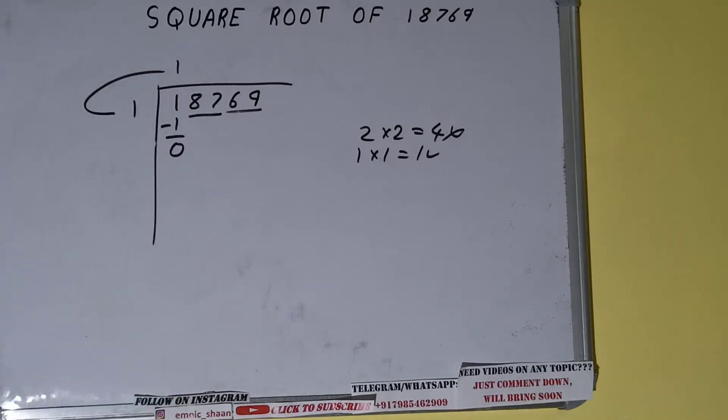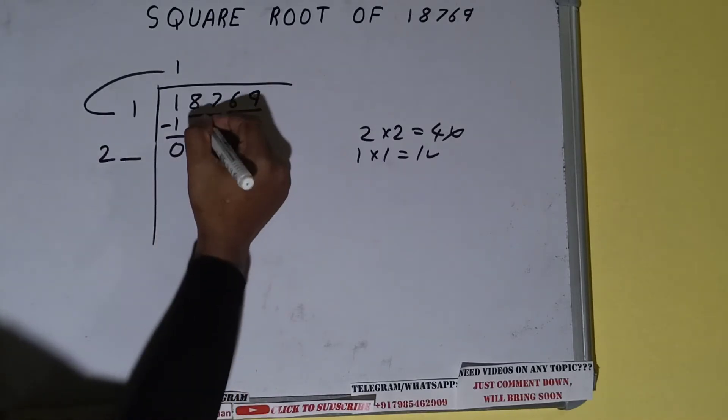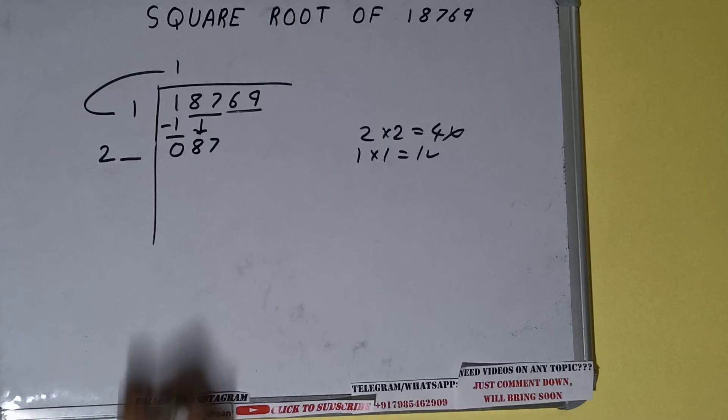So add both: 1 plus 1 will be 2. Write it here and keep a digit extra. And this number we need to make it big, so bring the next pair down and it will become 87.